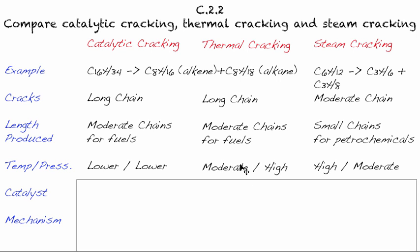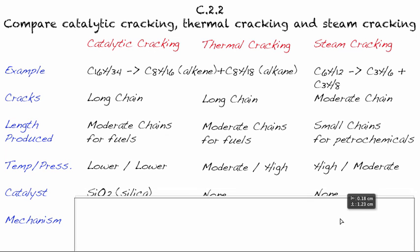For thermal cracking, we'll produce the same thing, but we're going to have to use moderate temperatures and high pressure. So it's going to be more expensive. We're going to have to put more energy into this process to get pretty well the same thing as catalytic cracking. That's why catalytic cracking is so popular now. But when we do want those really small chains for petrochemicals, like for plastics, we do need high temperatures and moderate pressures. That requires a lot of input.